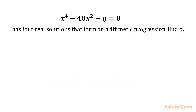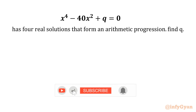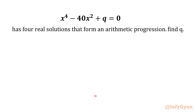Welcome to InfiGyan. Today in this video we are going to solve one very interesting question from Math Olympiads. We have one quartic equation x⁴ minus 40x² plus q equal to 0, which has 4 real solutions that form an arithmetic progression. We have to find the value of q.